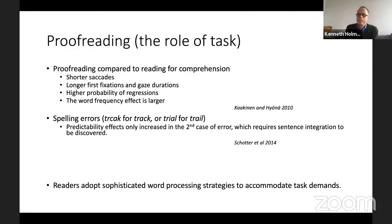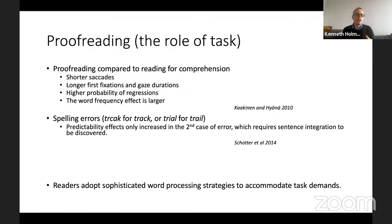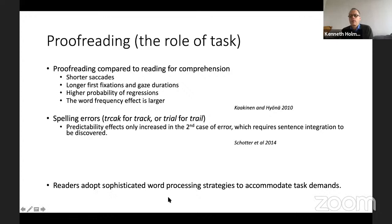People have also studied proofreading, which is an entirely different type of activity from reading a novel. Proofreading leads to shorter saccades, longer fixations and gaze duration, because you're looking for errors — that's entirely different from trying to comprehend content. There is a high probability of regressions, going back in the text, and a larger effect of word frequencies. The conclusion from reading research is that readers adopt fairly sophisticated word processing strategies to accommodate to the demands of the task.